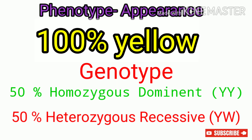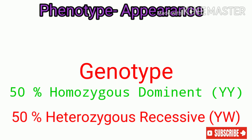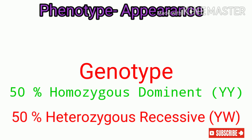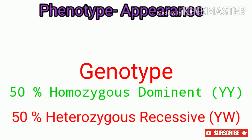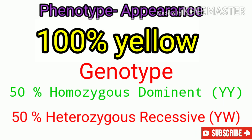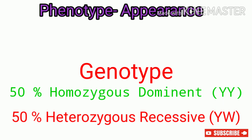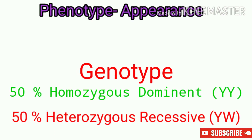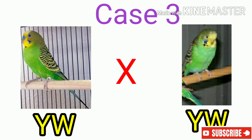In case 2, it is a gene. 50% is white. It is white. We will show case 3.